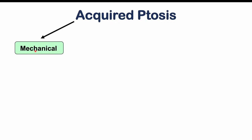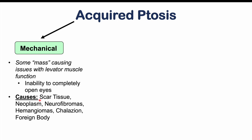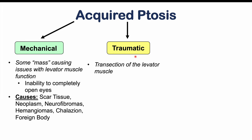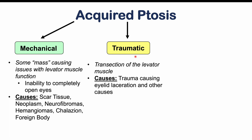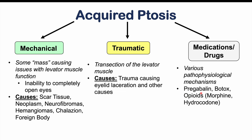Mechanical ptosis occurs when a mass interferes with levator muscle functioning, making it impossible to fully open the eyes. Causes include scar tissue, a neoplasm, neurofibromas, hemangiomas, chalazion, and foreign bodies. Traumatic ptosis results from transection of the levator muscle due to major trauma, such as an eyelid laceration. Medication-induced ptosis involves various pathophysiological mechanisms; causative agents include pregabalin, Botox, opioids like morphine and hydrocodone, and illicit drugs like heroin.